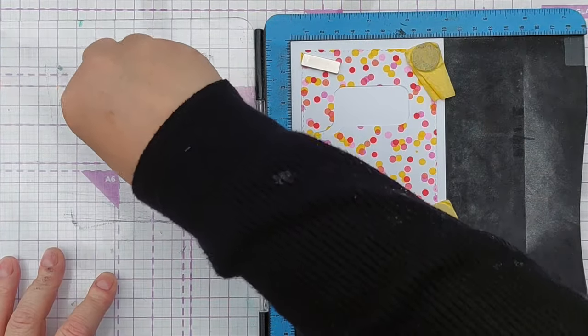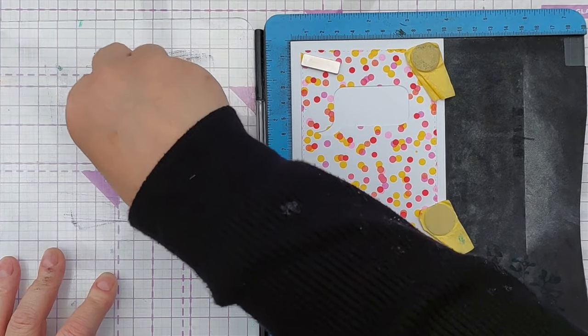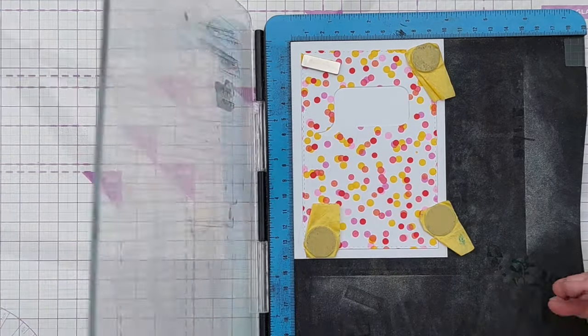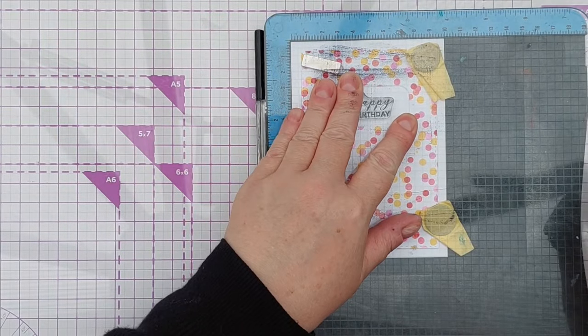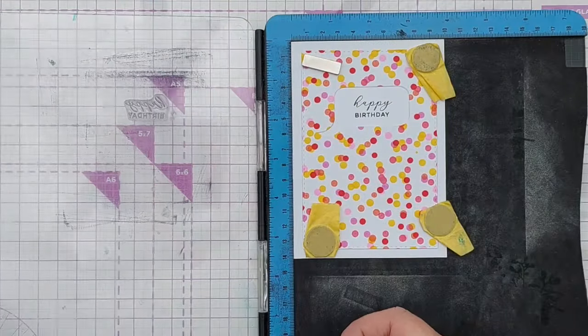For my speech bubble sentiment, I've got a photopolymer stamp so I'm going to use Memento Tuxedo Black with that because I get good results and it doesn't stain my stamp. And that's just a simple happy birthday in a speech bubble.